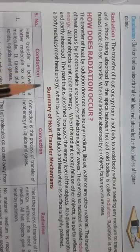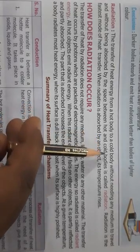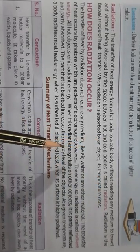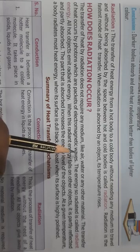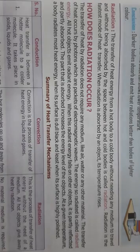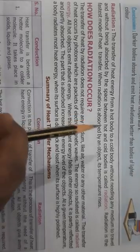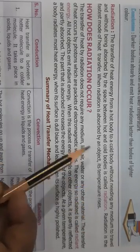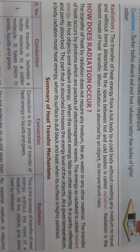So what is radiation? Radiation is the transfer of heat energy from a hot body to a cold body without needing any medium to travel. For conduction, you need solids — metals or any kind of solid for heat to transfer. Convection takes place through liquids and in air, so you need a medium. But in radiation, you do not need any medium. The heat travels from the hotter body to the colder body without any medium. This is called radiation.